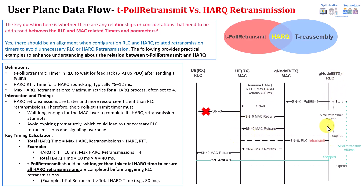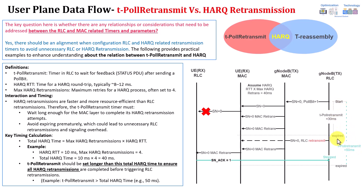Since the T-Poll Retransmit timer expired before the HARQ process was completed, the RLC will directly request a new RLC sequence retransmission right after the expiry. This will interrupt the HARQ processes. Now assume you extend the T-Poll Retransmit timer to become 50 milliseconds.